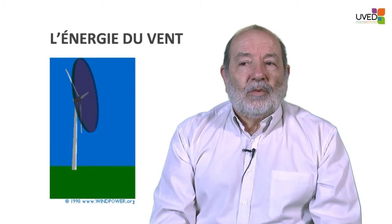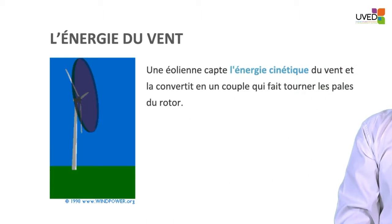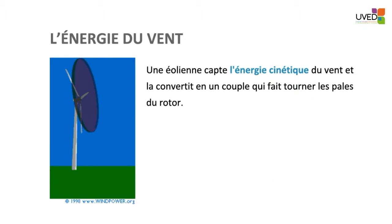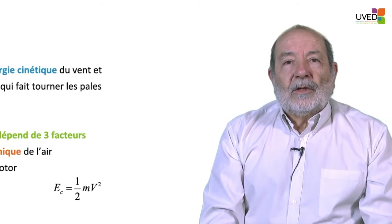Kinetic energy is based on the air mass, air weight, the surface covered by the wind, the surface of the blades, and the wind velocity. EC equals half of MV². For instance, a 40-meter radius blade yields 5,000 square meters.